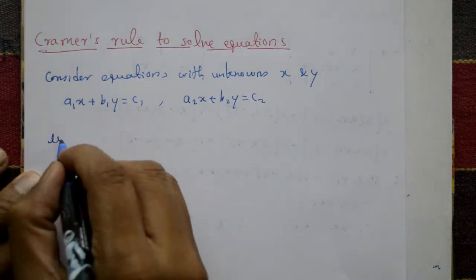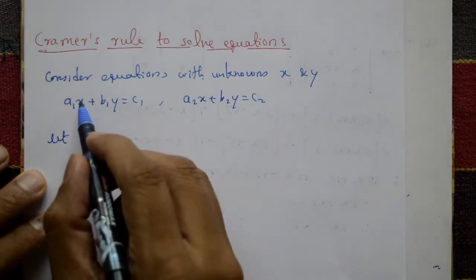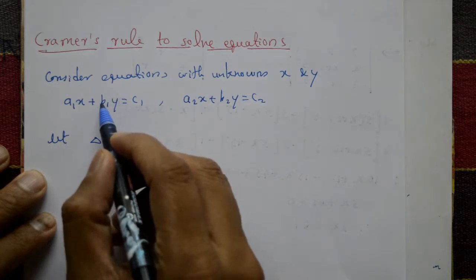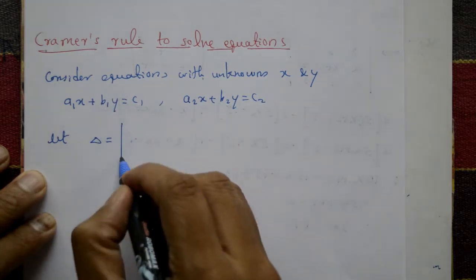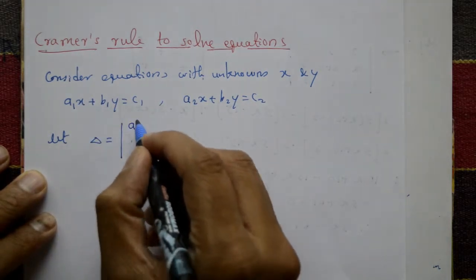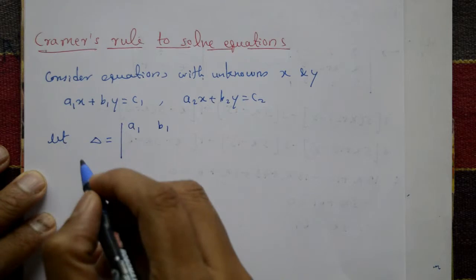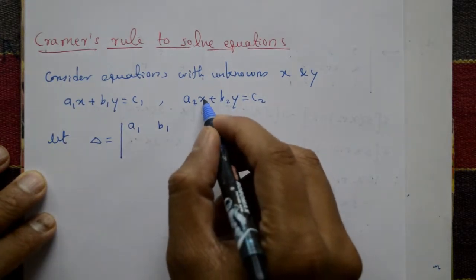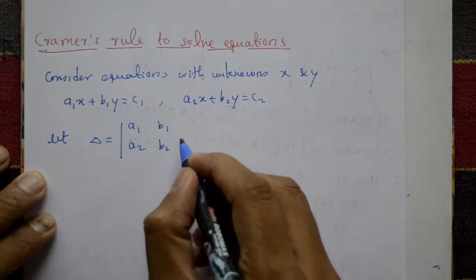Now take delta. Delta is equal to the determinant formed by taking the coefficients of x and y from both equations. Coefficient of x is a1, coefficient of y is b1 for the first equation, and a2 and b2 for the second equation.